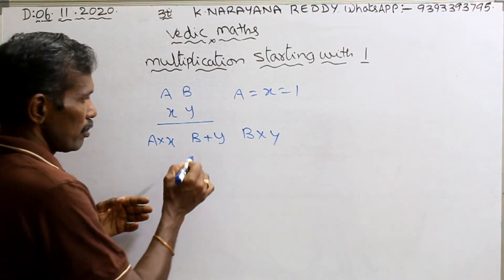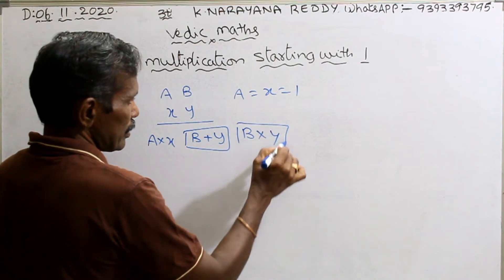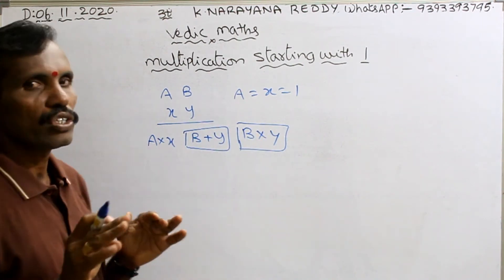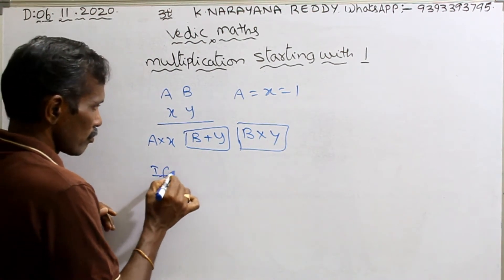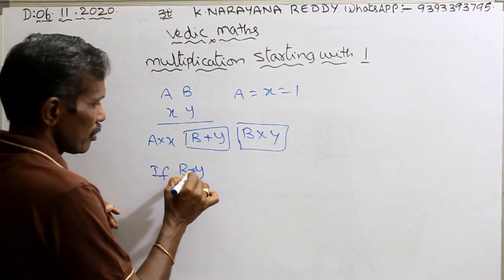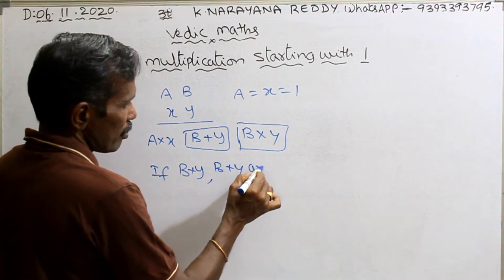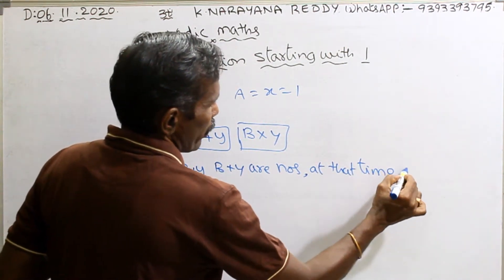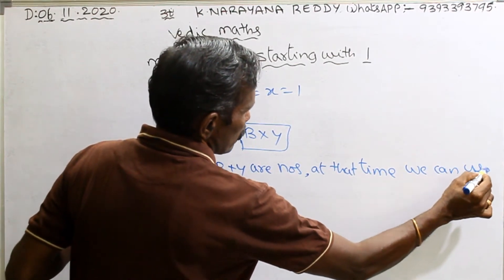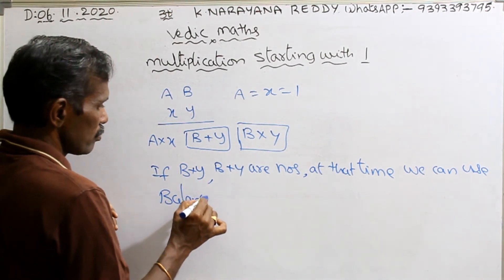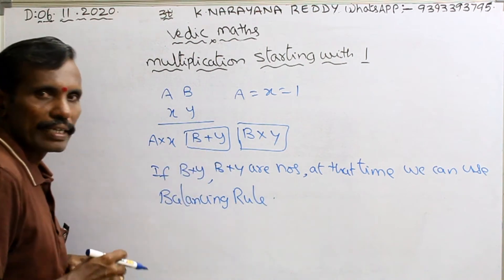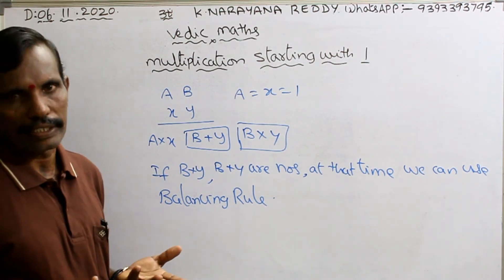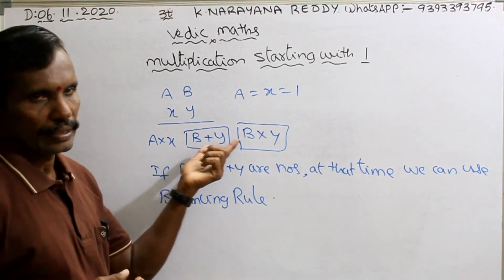For example, this digit or number — if this is a digit, there is no balancing rule. But if this is a number, at that time you can use the balancing rule. If b plus y and b into y are numbers, we can use the balancing rule. What is the balancing rule, already told in the last classes. Otherwise, you do not need any balancing rule — you can directly write the digit, because it is a single digit. These are single digits up to 9.